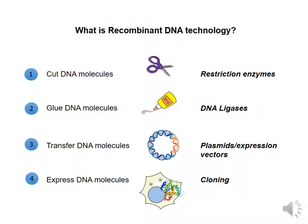For recombinant DNA technology, there are four important elements that we will need. The first element is the use of restriction enzymes to cut DNA molecules. The second element are DNA ligases to glue DNA molecules together.